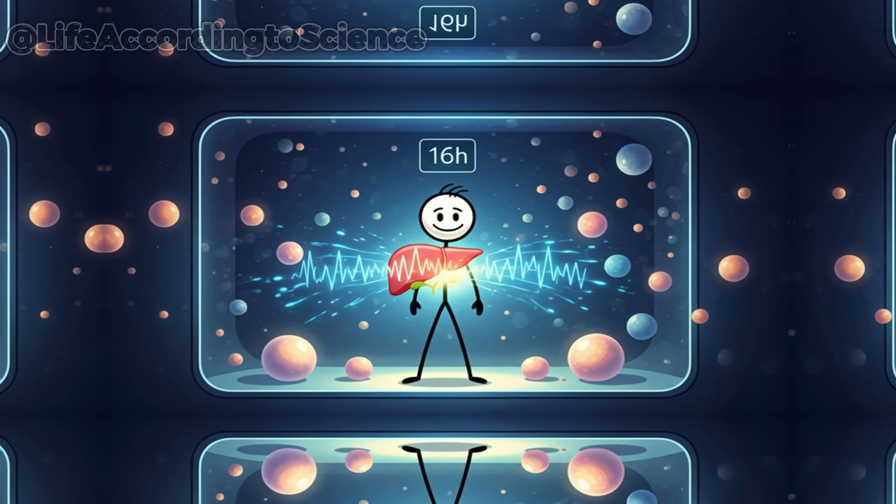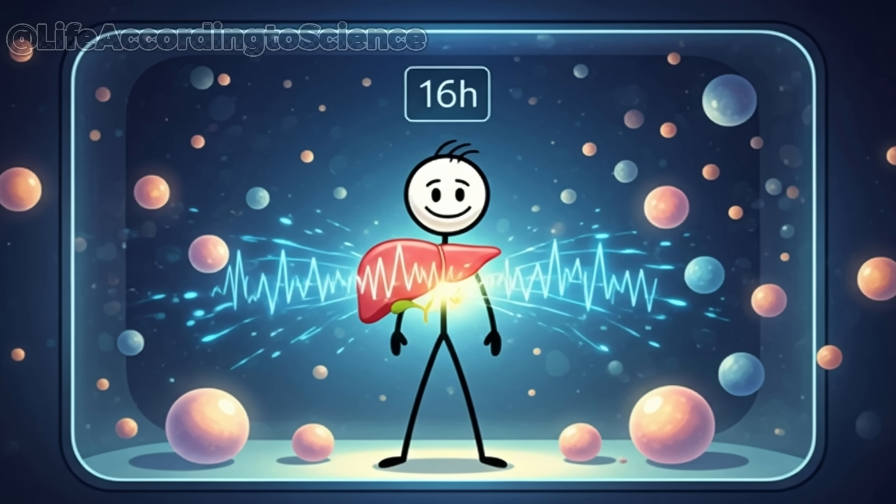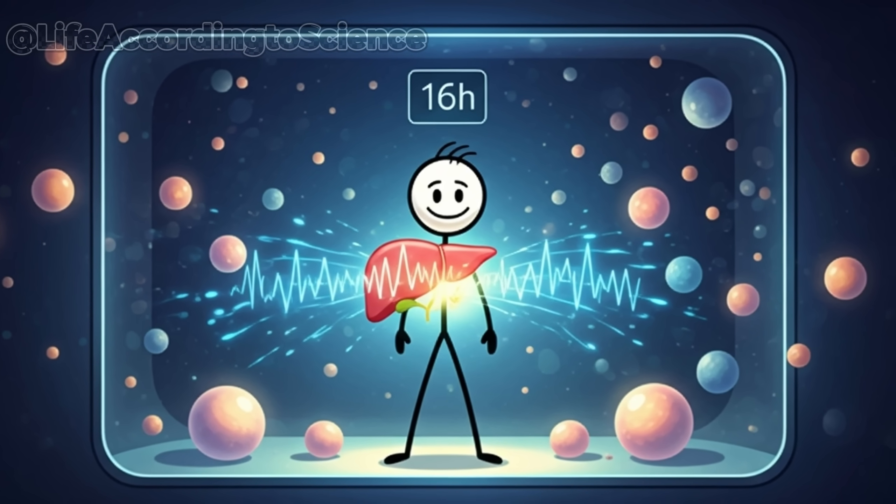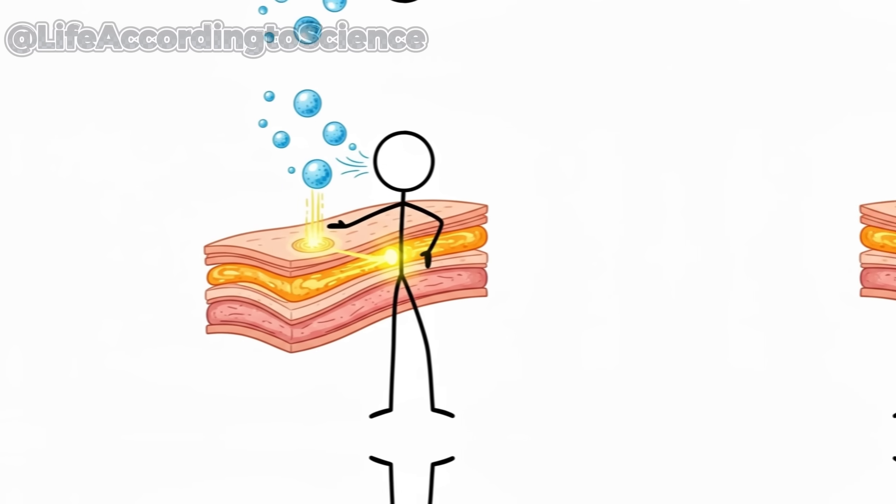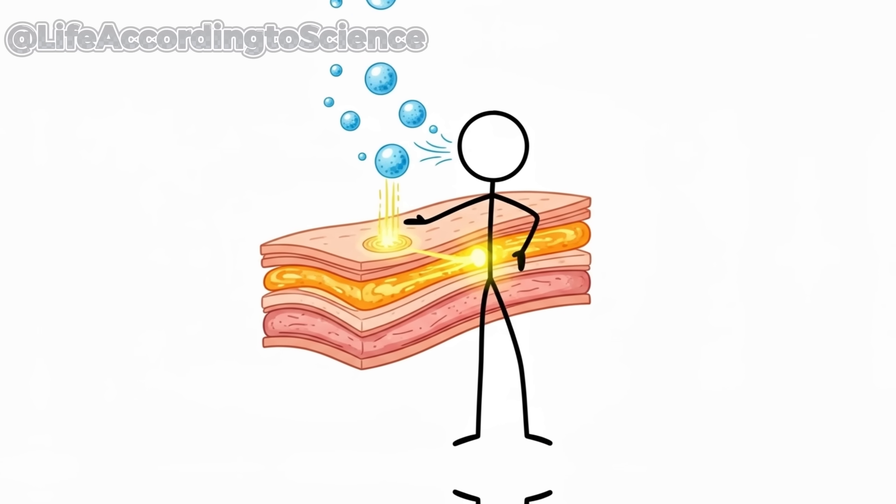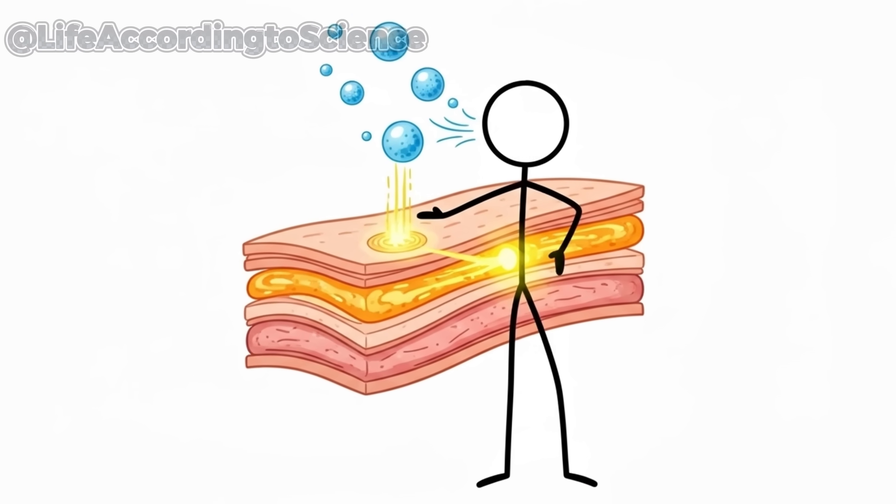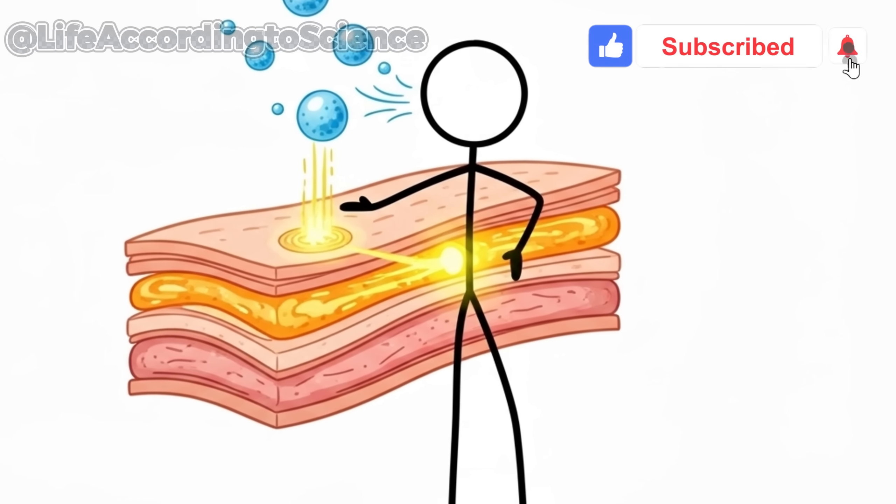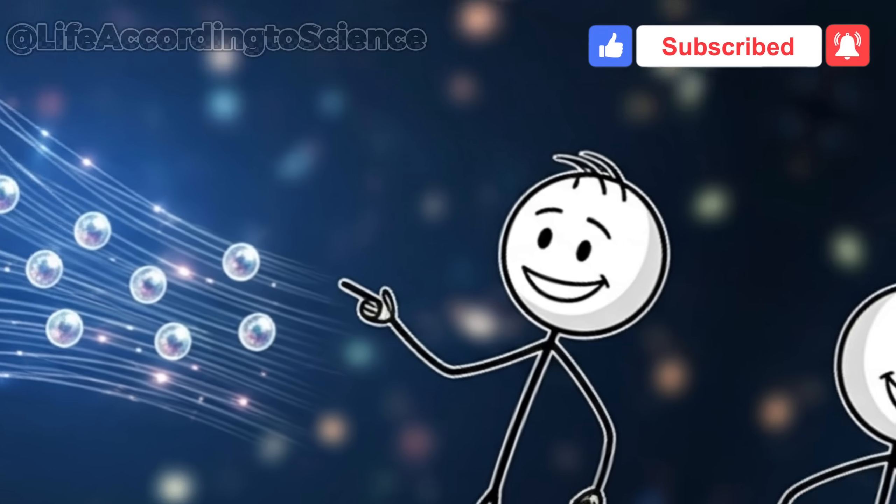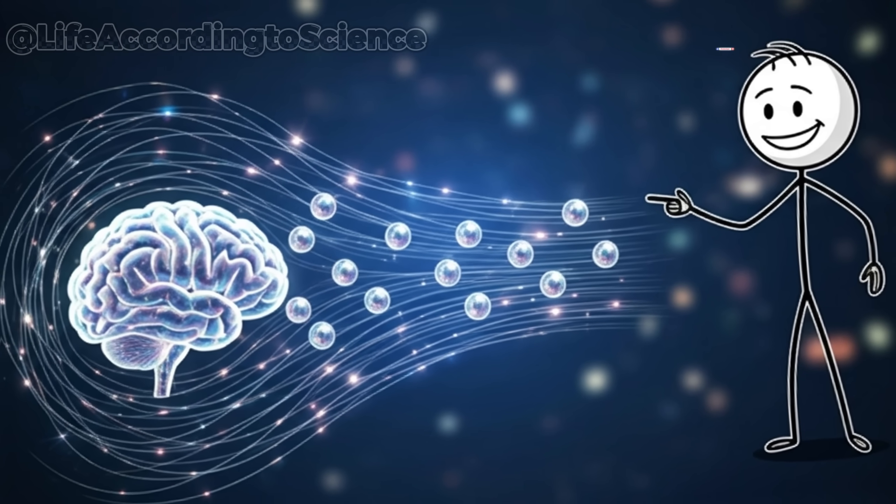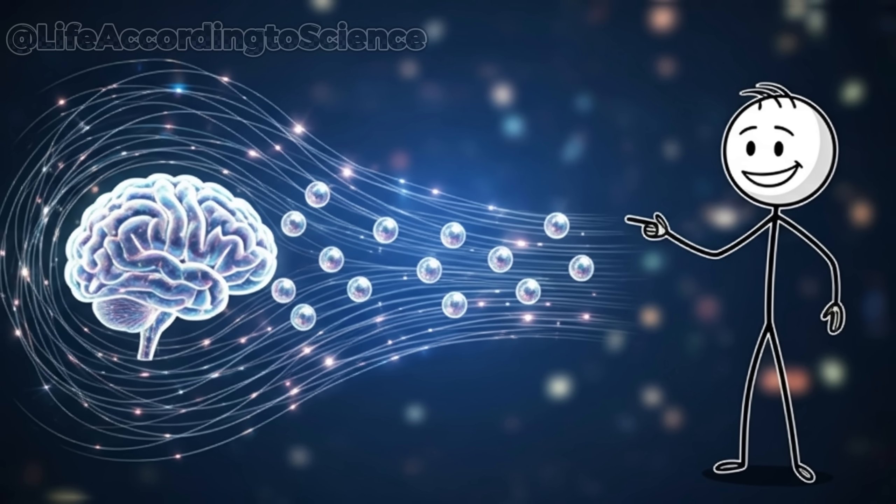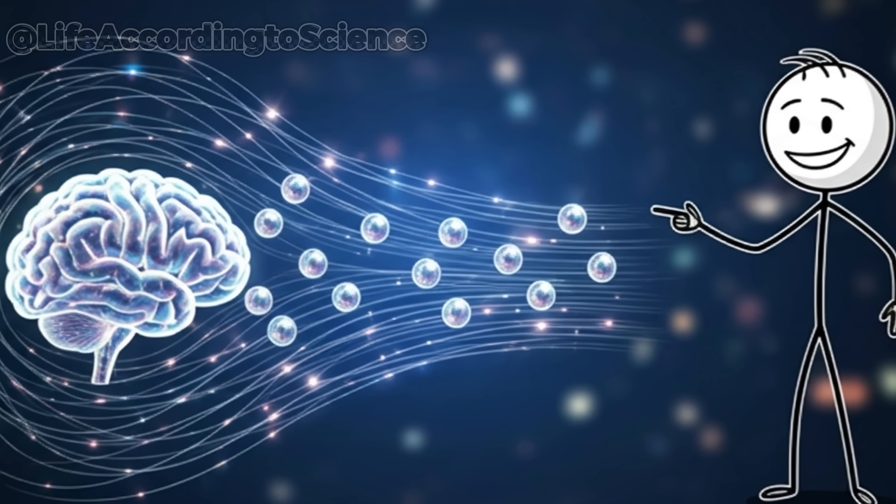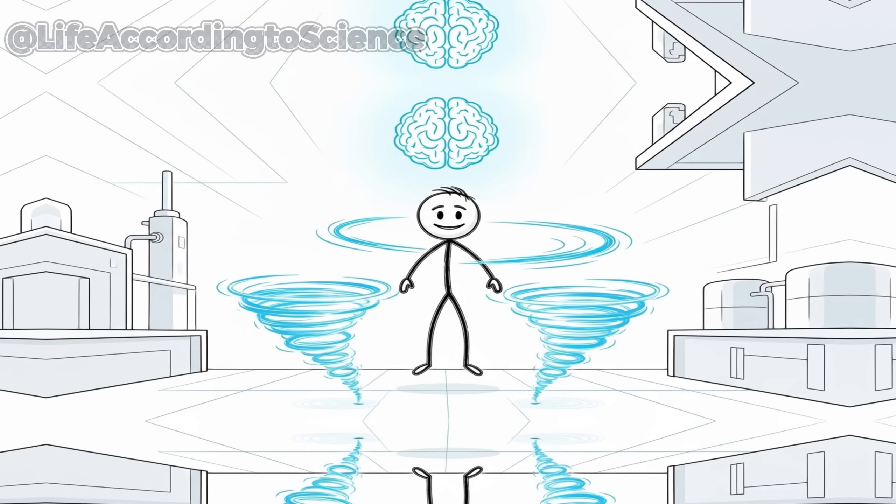At around the 16-hour mark, your body officially enters ketosis, a remarkable metabolic shift that changes everything. Fat, once stored quietly beneath your skin, becomes liquid energy. Your liver transforms fatty acids into ketone bodies, molecules that can cross the blood-brain barrier and serve as your brain's new fuel. It's like switching from regular gasoline to high octane, slower burning, longer lasting, and surprisingly efficient.